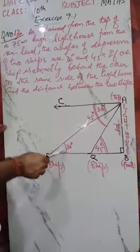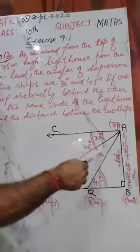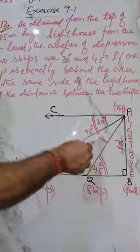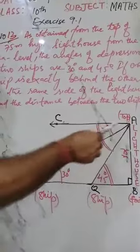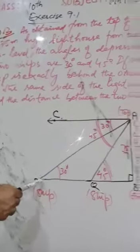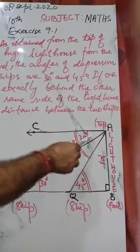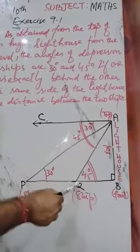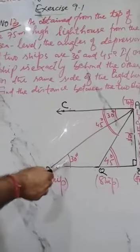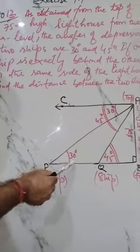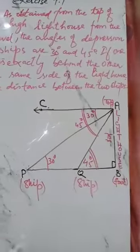This is P, the first ship, and Q, the second ship. From A to P, 30 degree angle of depression is forming, and from A to Q, the angle of depression is 45 degrees. A is the observer, P is one ship object at 30 degrees angle of depression, and the second ship Q is at 45 degrees.